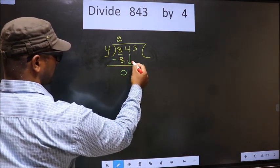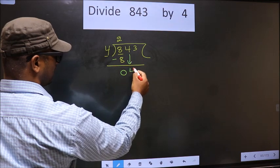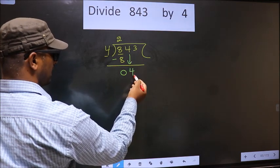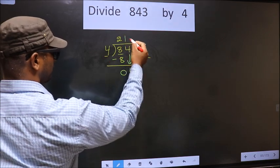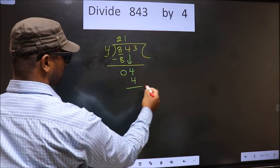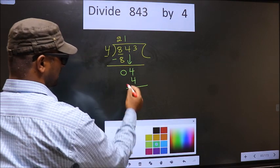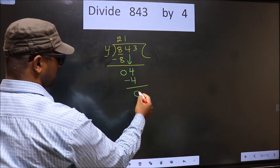Now, you bring down the beside number. So, 4 down. Here we have 4, here also 4. When do we get 4 in 4 table? 4 once, 4. Now, you subtract. 4 minus 4, 0.